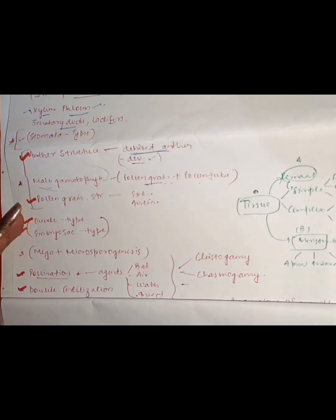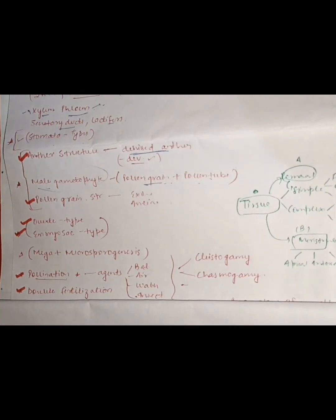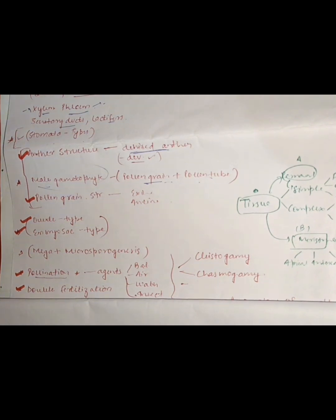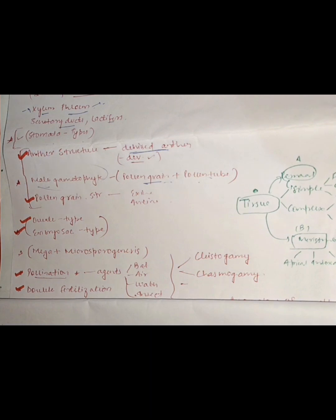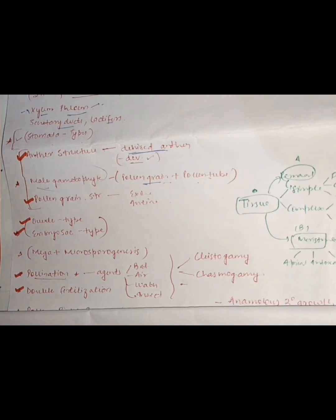You should know about pollination — this is a very important topic. I have uploaded almost all videos on pollination. You can go to the plant morphology and anatomy section. Pollination will be asked in respect to agents. If it is through air, it is anemophily. If it is through water, it is hydrophily. Ornithophily is by birds, and chiropterophily is by bats. These agents are also called vectors. You should also know the difference between self-pollination and cross-pollination.